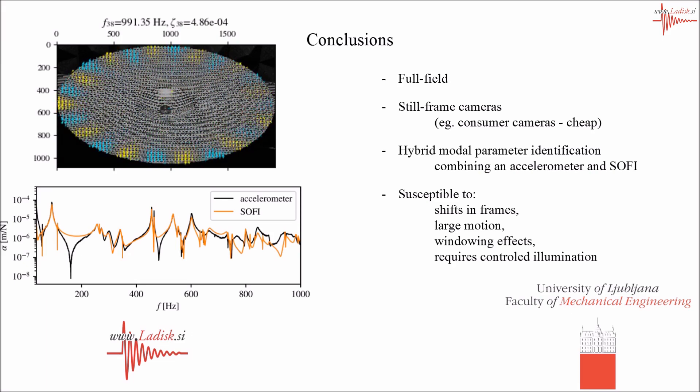The approach differs from strobe lights in that the strobe lights produce short pulses of light and therefore stop motion. While SOFI produces the spectral component for a single harmonic from three images of a considerable exposure time.